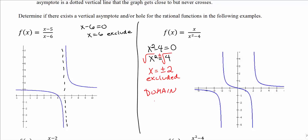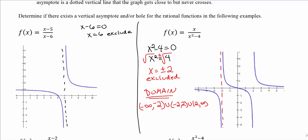Writing out the domain: from negative infinity to negative 2, then everything between negative 2 and 2, then everything after 2. On the graph, we use everything to the left of negative 2 but not negative 2 itself — there's a vertical asymptote there, splitting the graph. The same occurs at positive 2. Since we cannot factor and cancel x² - 4 with the numerator x, those exclusions remain as vertical asymptotes.